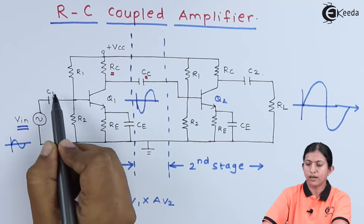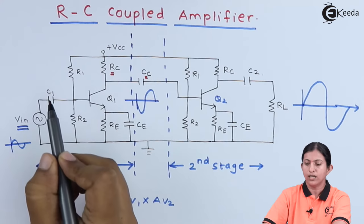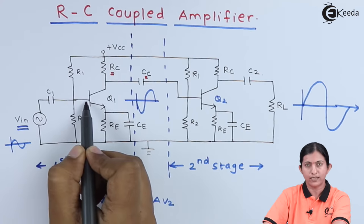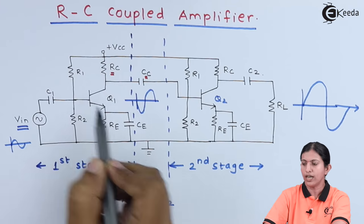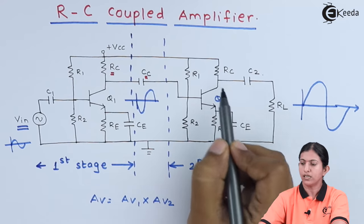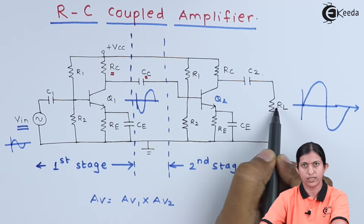The input is applied through coupling capacitor C1. Capacitor C1 couples the input to the base terminal of the first stage, and capacitor C2 which is connected at the output couples the output to the load resistor.